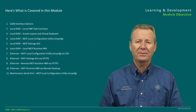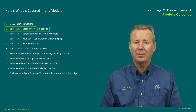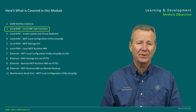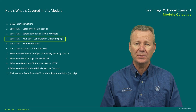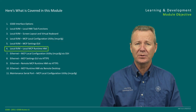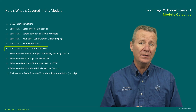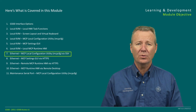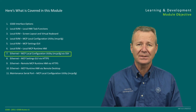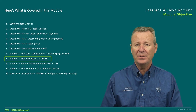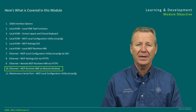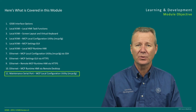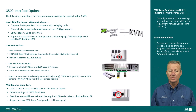In this video we'll be taking a look at the G500 interface options. We'll look at local KVM items such as the local HMI task function, screen layout and virtual keyboard, the MCP local configuration utility or MCP CFG, MCP settings GUI, the local MCP runtime HMI, and under Ethernet we'll look at MCP CFG via SSH, MCP settings GUI via HTTPS, remote MCP runtime HMI via HTTPS, remote MCP runtime HMI via remote desktop, and lastly the maintenance serial port MCP local configuration utility. Once the G500 unit is powered up, several interface options are available for connecting to the device.